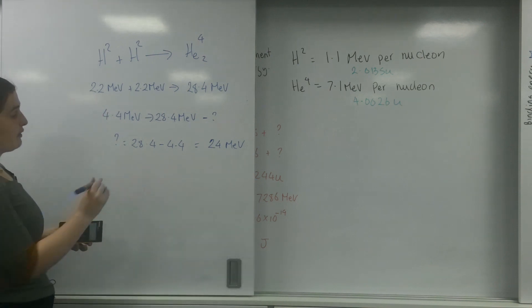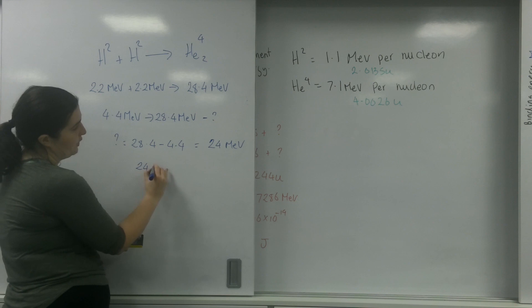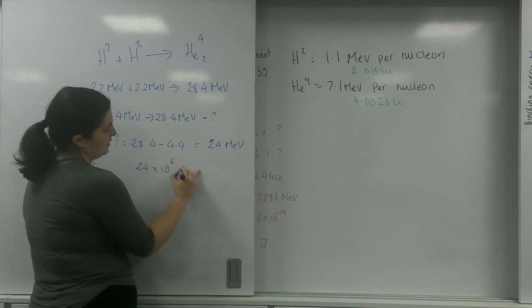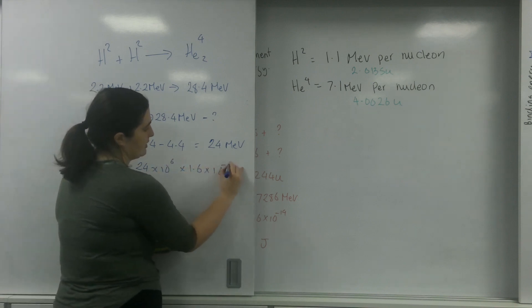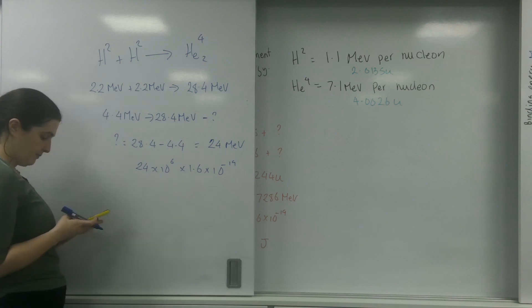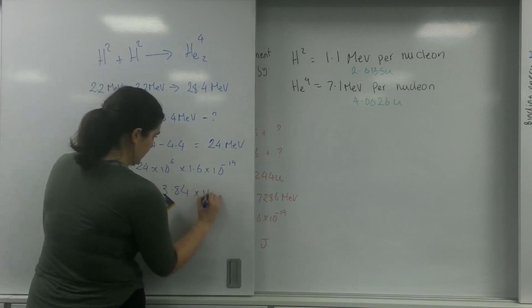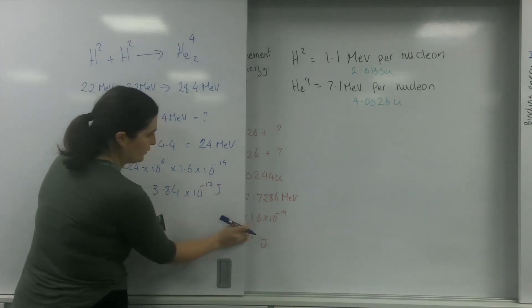So in here, I've got my 24 MEV. 24 times 10 to the 6 times 1.6 times 10 to the minus 19. 3.84 times 10 to the minus 12 joules.